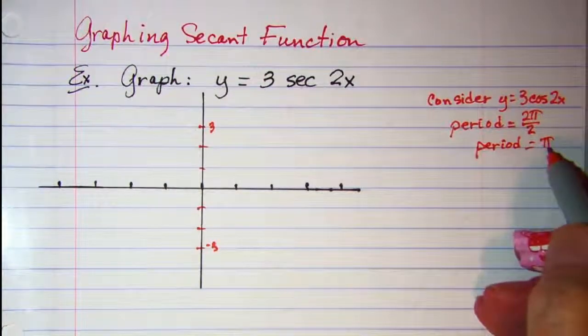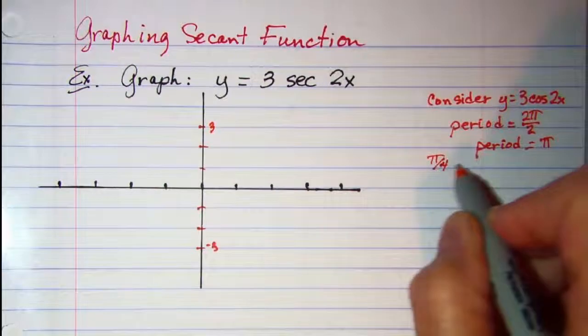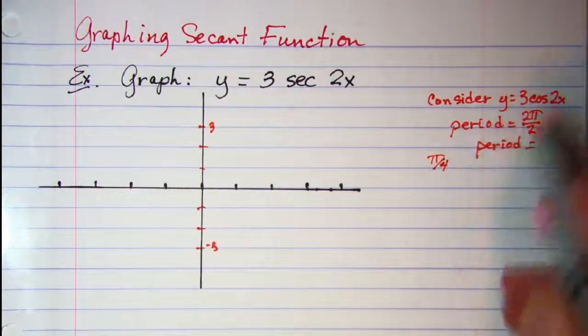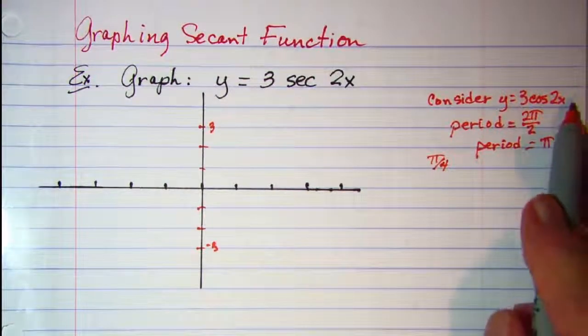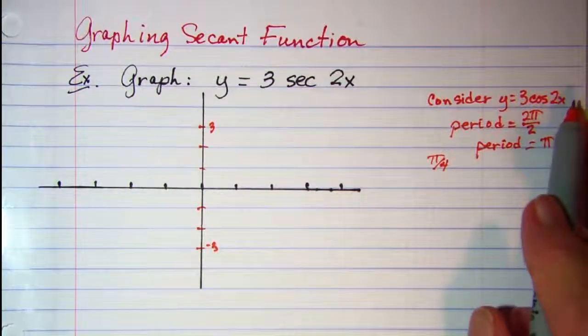Now if we divide this by 4 to represent our 4 quadrants, we take π divided by 4 and there is no phase shift, so my starting point is 0.